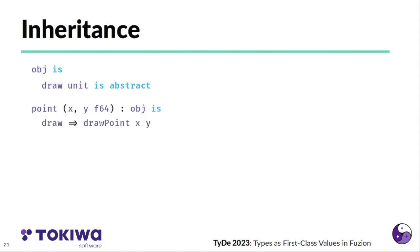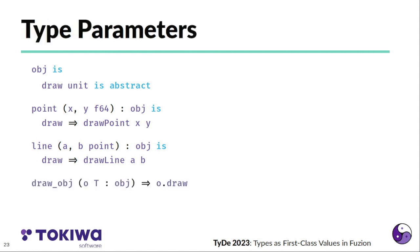Now we have inheritance, so we can make point inherit from object and provide an implementation for draw, and also line can inherit from object and provide a different implementation for draw. And now we can have draw object receiving an object with a type parameter t that has to inherit from object and call draw on that.